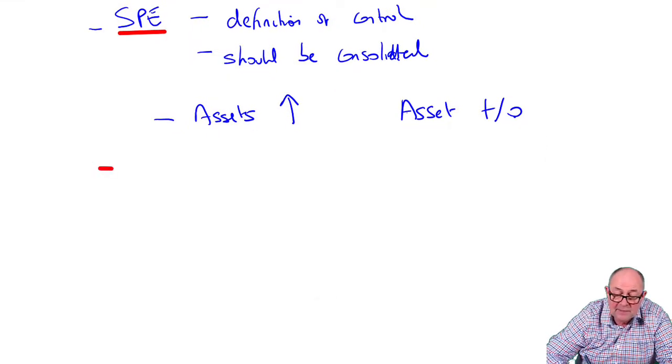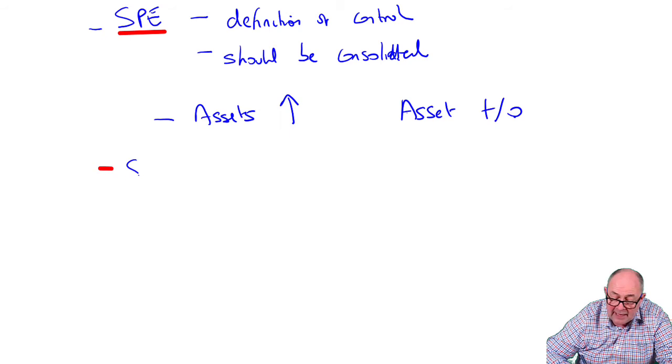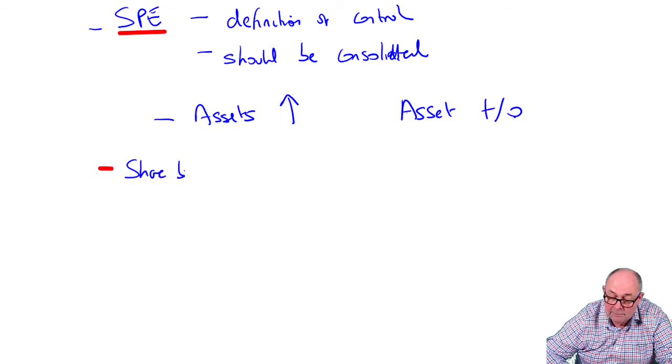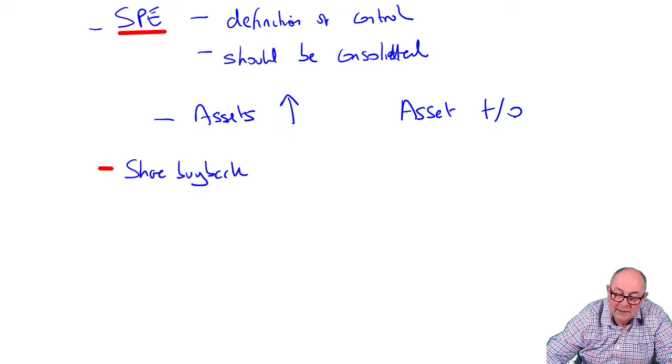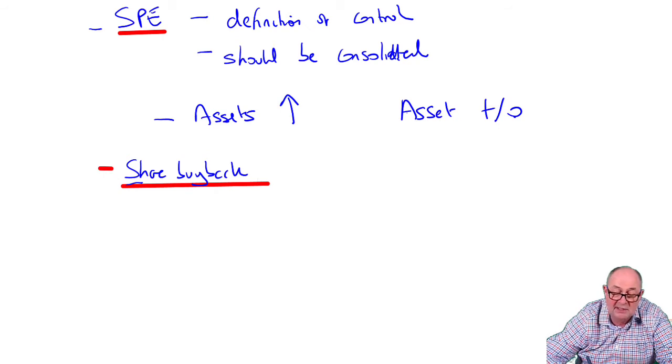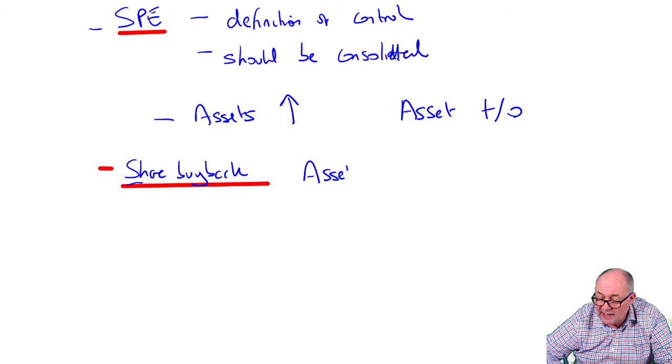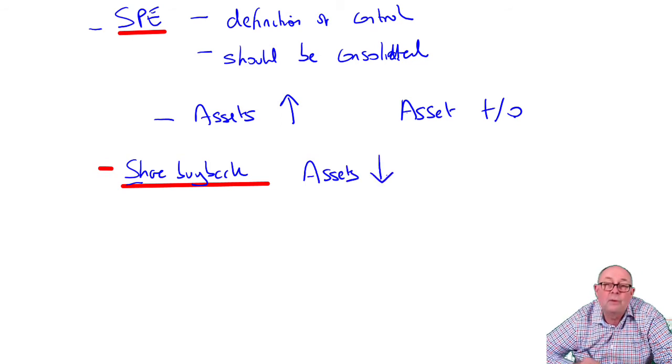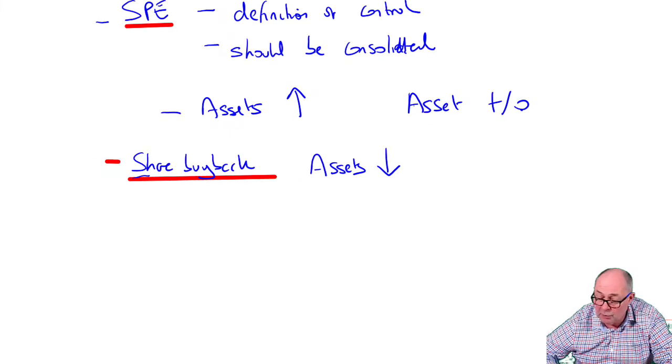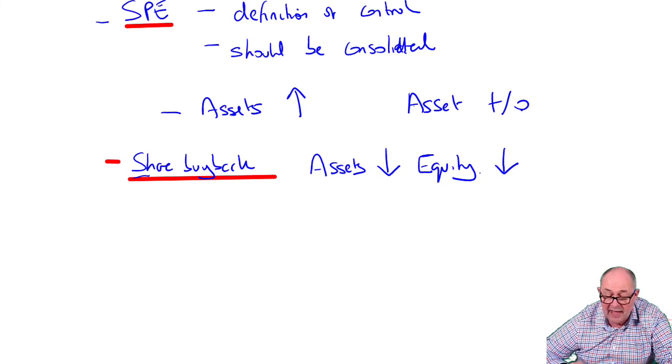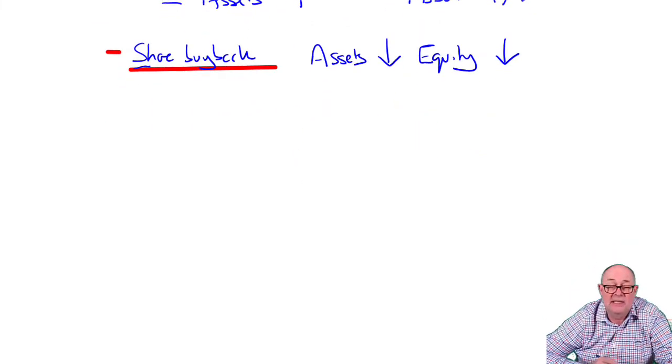You've then got the share buyback. And even if you can't do anything sophisticated, we could still explain the basic double entry. If you buy back shares, the assets of the business will fall. And also share capital and reserves would fall, so equity will fall as well. If that's all you can say, it's something.